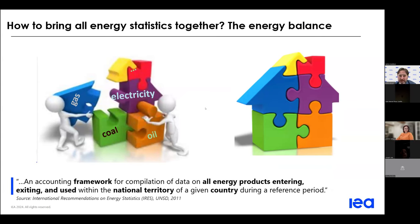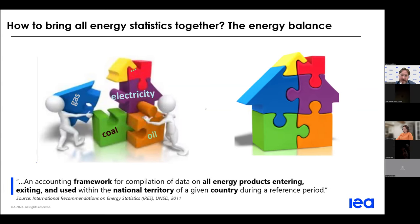接下来非常重要的是讲到能源平衡。我们在第四天还会有专门的课程，现在初步跟大家介绍。根据IRES，能源平衡是一种会计框架，用来采集数据，计算所有的能源产品，不管是进入、进出和在国土内的使用，包括煤、油、电等等。它针对每一个不同的能源进行数据采收，有效地反映出一国的能源分布，通过一个会计体系把国家的能源产出和进口与全球能源产出进行平衡。